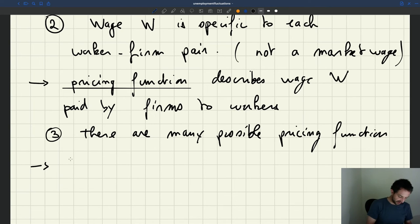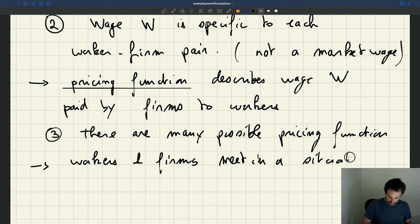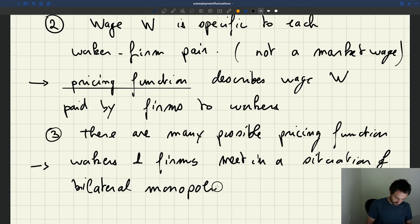So there are many functions that can give the wage between workers and firms. And why is that? We've said that the economic argument is that workers and firms meet in a situation of - so the technical term is bilateral monopoly.